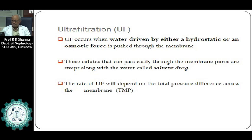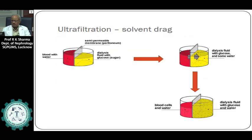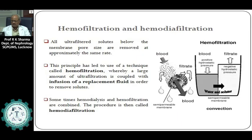The indications for dialysis include fluid overload, hyperkalemia if serum potassium is high, metabolic acidosis, hyperphosphatemia, hypercalcemia or hypocalcemia, anemia, neurological dysfunction, pericarditis, and gastrointestinal manifestations like nausea, vomiting, and diarrhea. Severe hypertension due to salt and water overload is also an indication. Patients with chronic kidney disease who become malnourished should be considered for dialysis even earlier, even in the absence of other indications.